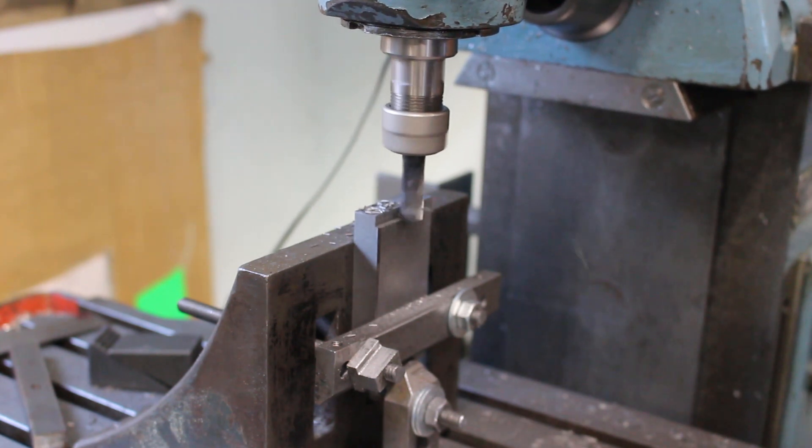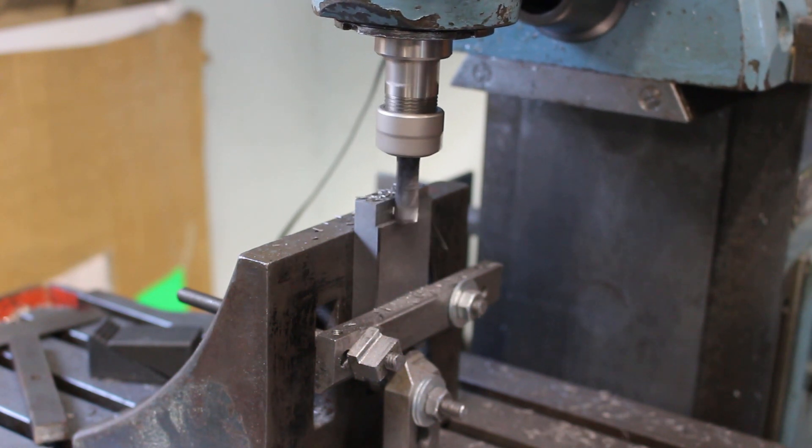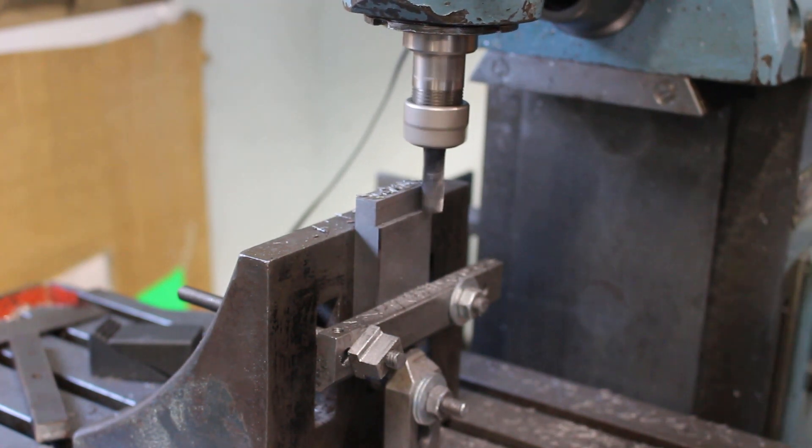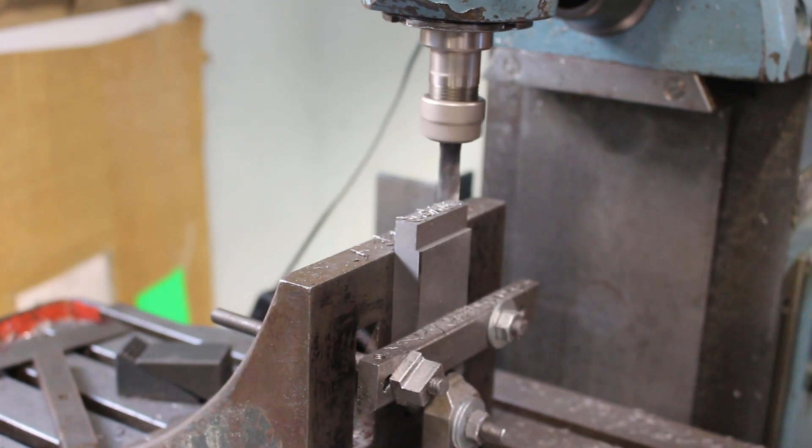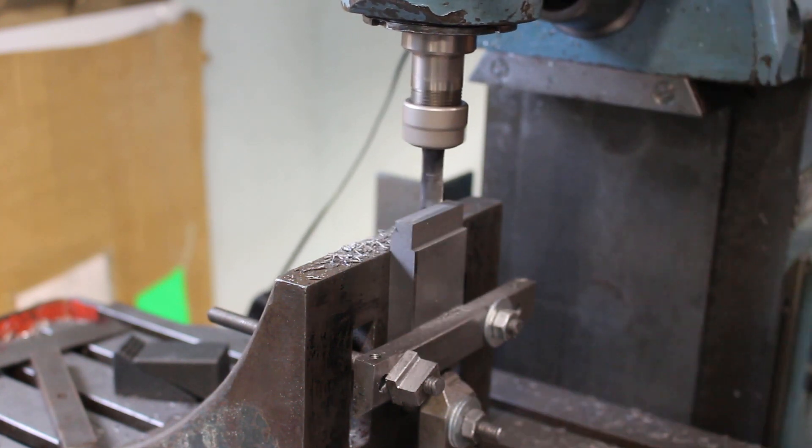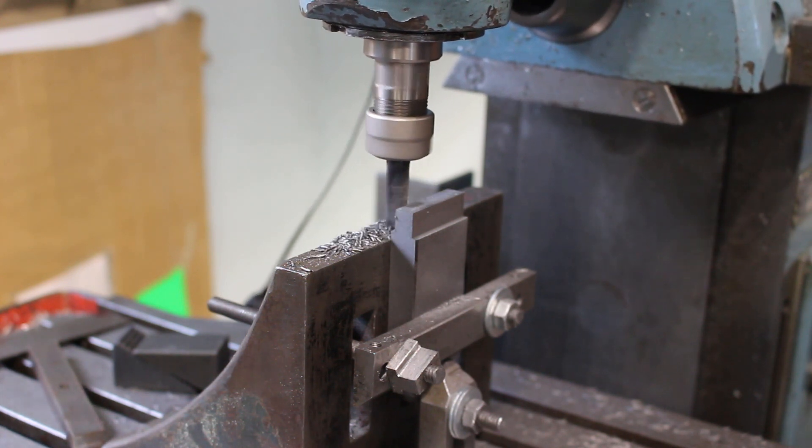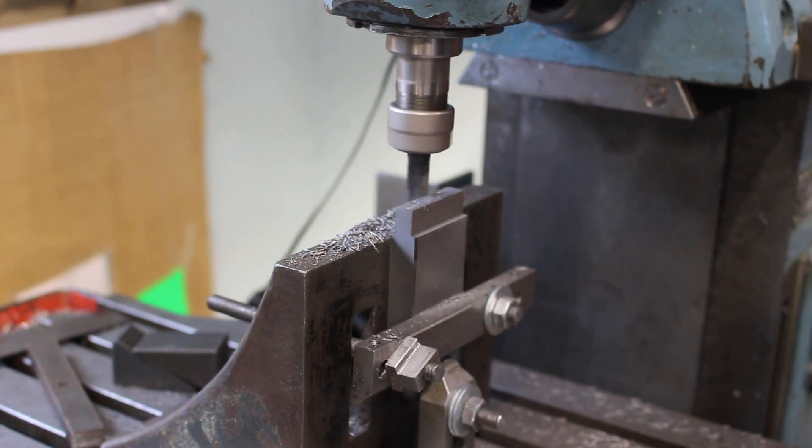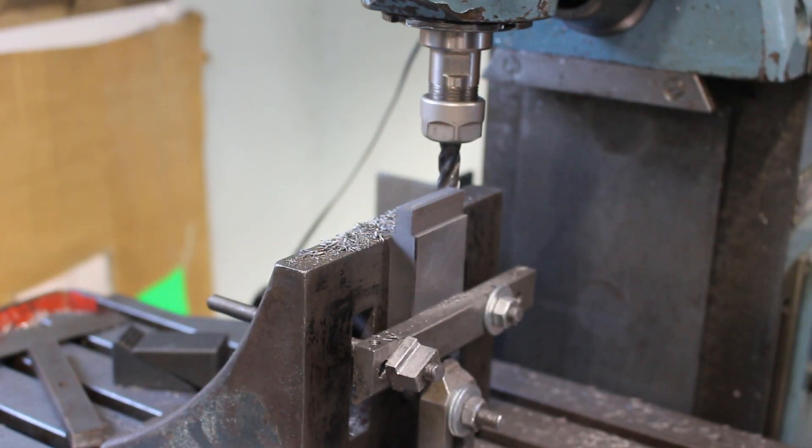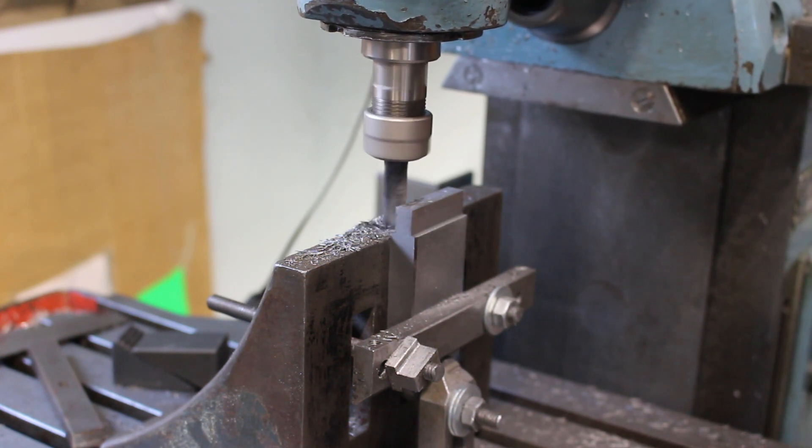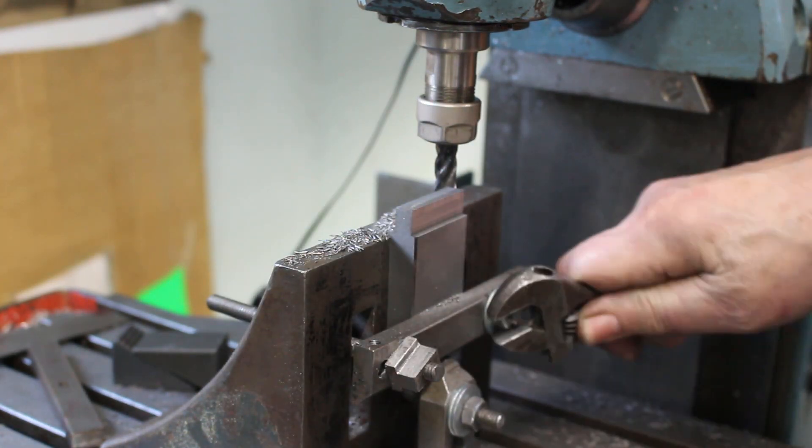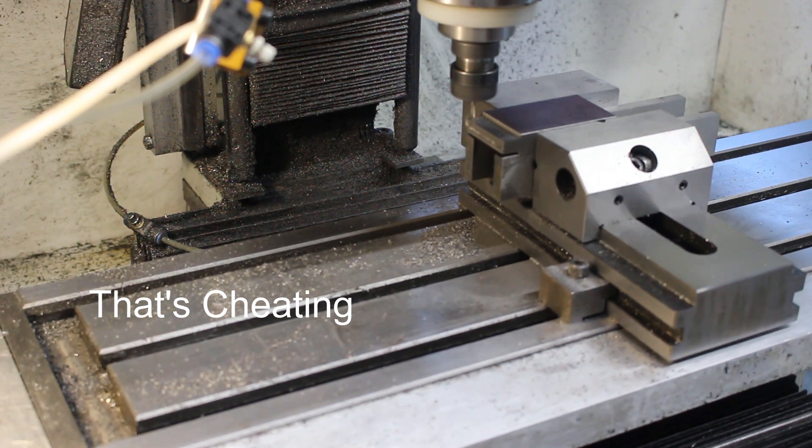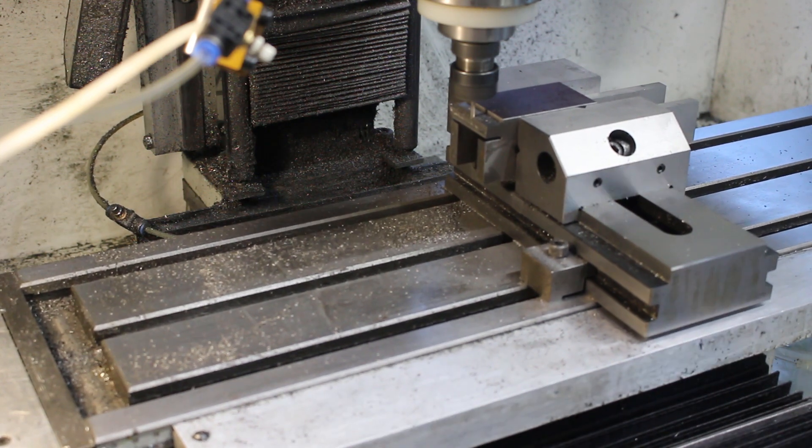Machining the sides. Now we'll turn to the CNC mill to profile the wave-like shape. I'll not bore you with lots of CNC clips, I'll show a few just to give you the idea.